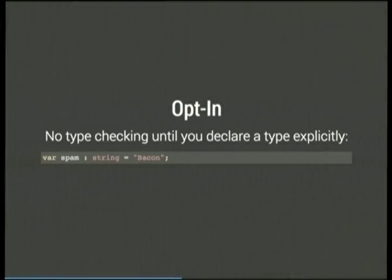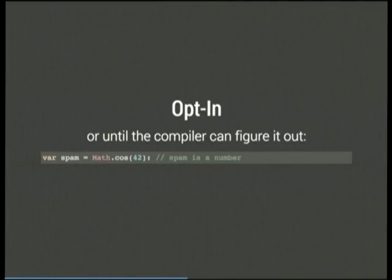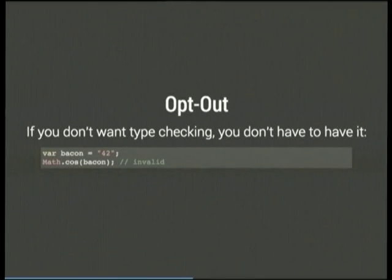There are two ways to participate. The first is to explicitly declare a type — you say a variable is a string, therefore it is a string. Alternatively, you could ignore writing your own hints and see if the compiler can make a guess itself. JavaScript has type coercion behavior — as a Python developer I don't like that, but there's a lot of JavaScript out there that expects type coercion, like taking text inputs and treating them as numbers. If you want to opt out of the type system, you can.